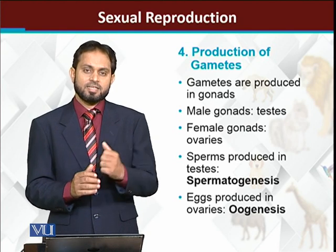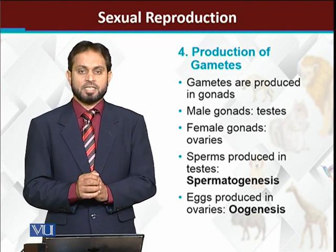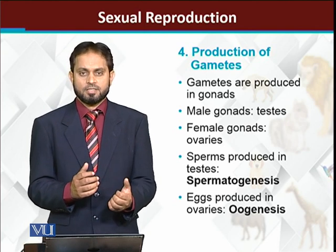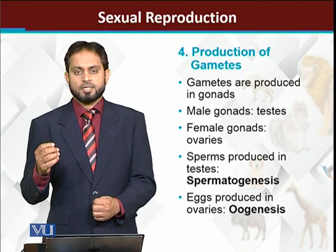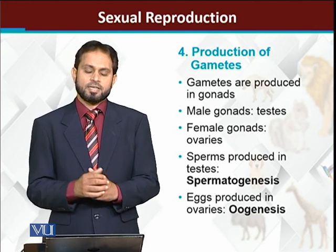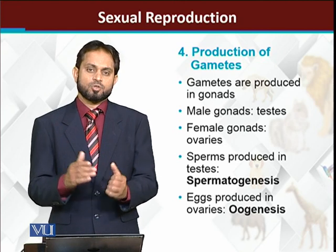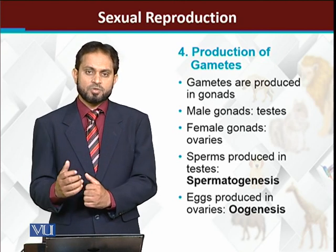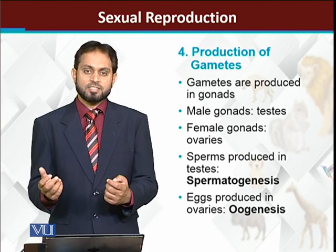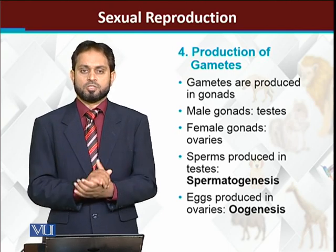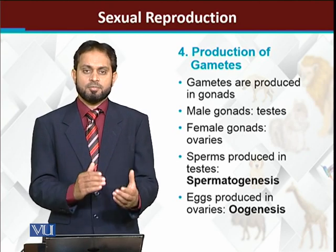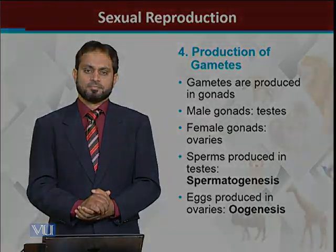The method of production of sperms is called spermatogenesis — that is, the genesis or synthesis of sperms. The production of the egg, also called ovum, is called oogenesis. Both spermatogenesis and oogenesis involve meiosis, which means that overall, both eggs and sperms are products of meiosis.